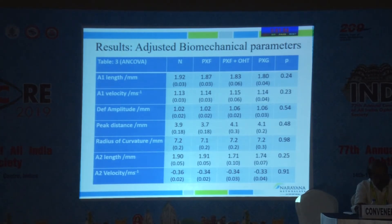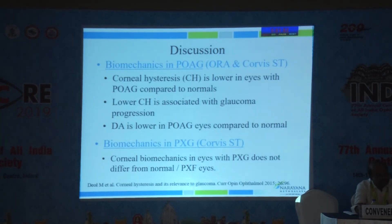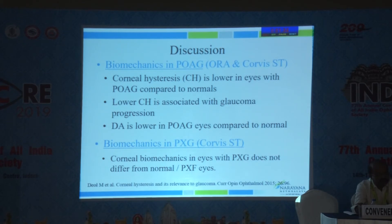How does this compare with previous studies? There is substantial work done on biomechanics in primary open-angle glaucoma using both ORA and Corvis. These have shown that corneal hysteresis is lower in eyes with POAG, it is associated with glaucoma progression, and Corvis studies have shown that deformation amplitude is altered in POAG eyes. However, biomechanics in pseudoexfoliation glaucoma has not been extensively studied. This is the first study establishing that Corvis biomechanics in PXG eyes does not differ from normal or PXF eyes.